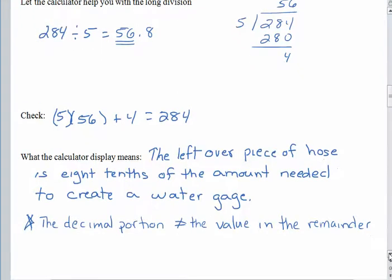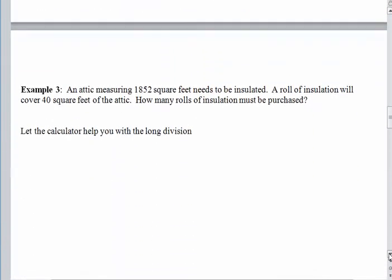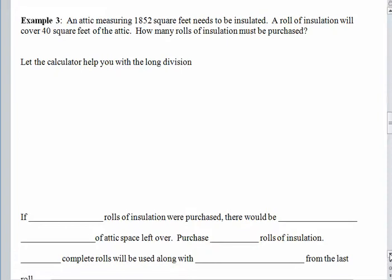Alright. Let's try another one here. Let's scroll to the next page. We have an attic measuring 1,852 square feet, and we need to insulate it. A roll of insulation covers 40 square feet of attic. How many rolls of insulation have to be purchased? So if we were creating a picture here, we'd have this attic. And one roll would cover about that much. And a second roll would cover that much. And a third roll would cover that much. And we would go on like that and cover the attic. So let's let the calculator help us out with the long division.